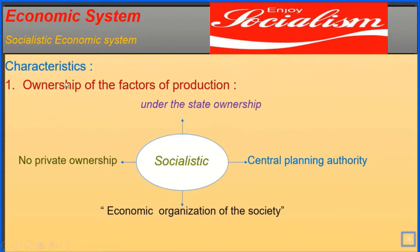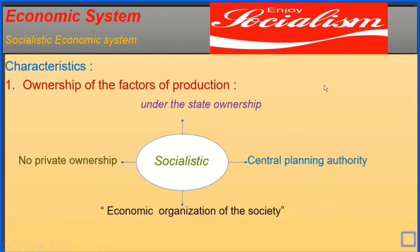The main characteristics of the socialistic economic system. Number 1: Ownership of the factors of production. Here, the factors of production are under state ownership. The four factors of production are under state ownership and there is no private ownership. A central planning authority takes all decisions regarding production. This economic system is also called the economic organization of society.